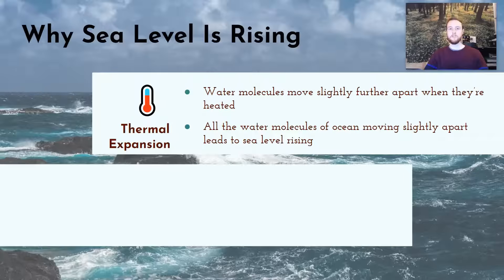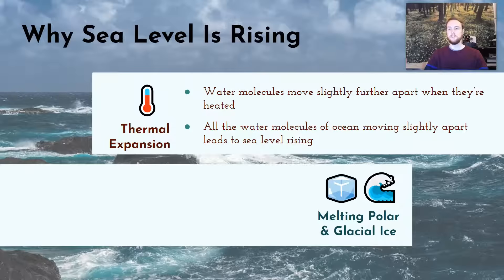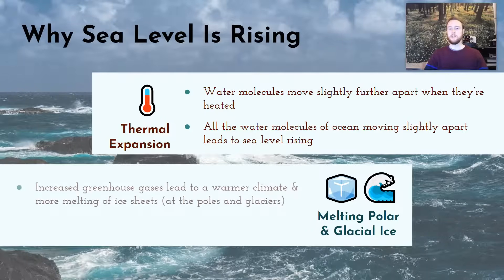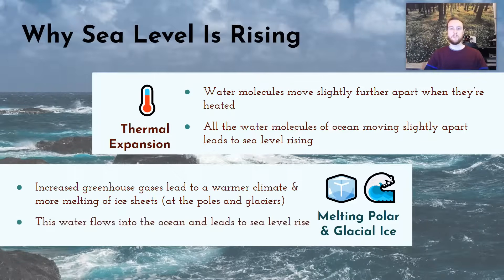The second reason global warming leads to sea level rise is the melting of polar and glacial ice. As greenhouse gas concentrations increase and temperatures rise, ice sheets in glaciers and at the poles melt, and that water flows into the ocean — directly if at the poles, or via rivers if it's glacial ice on land. These two combined effects — thermal expansion and melting ice — are both ways that increasing greenhouse gas concentrations lead to sea level rise.